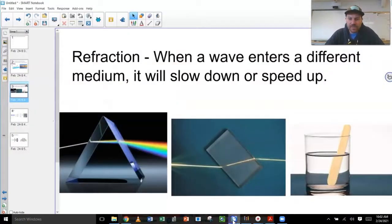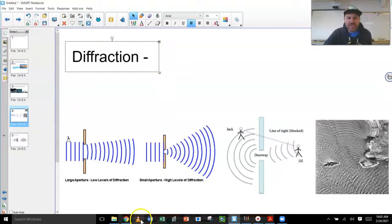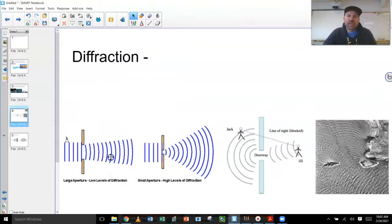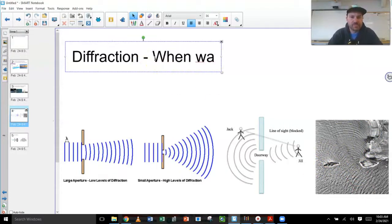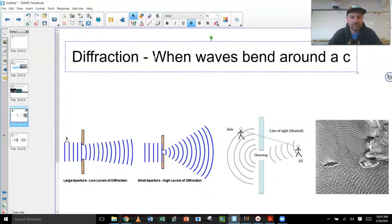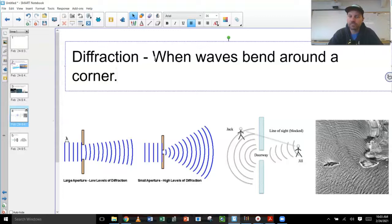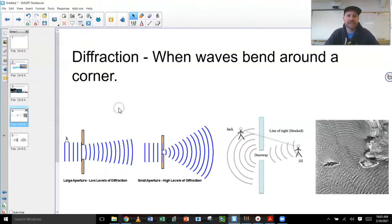Our next one is diffraction. Diffraction, when I do a quick image search, diffraction is when waves can bend around a corner. And you see here, there's an example of somebody talking. Jill is talking. And even though there's a direct barrier between Jill and Jack, if there's a hole in the doorway, the waves can actually bend around it. And here's a picture of overhead of a couple of islands, waves coming in. And you can see that bending pattern in the waves. Diffraction. When waves bend around a corner.